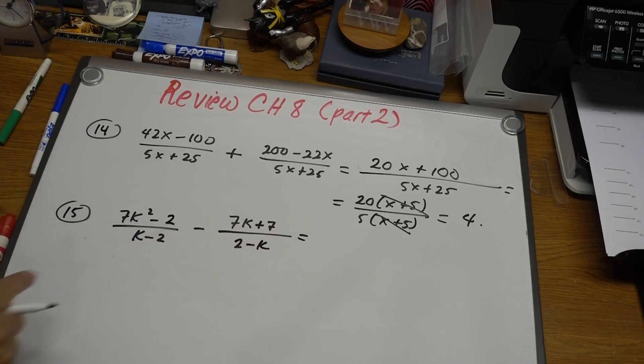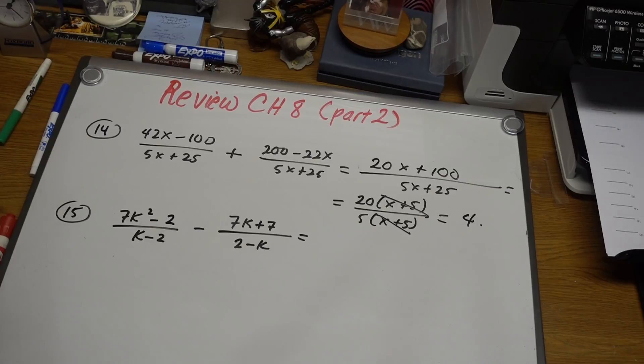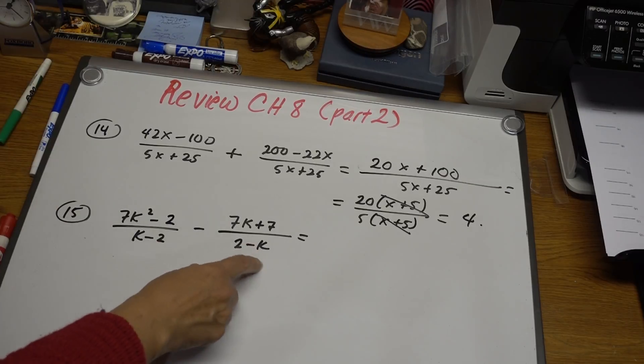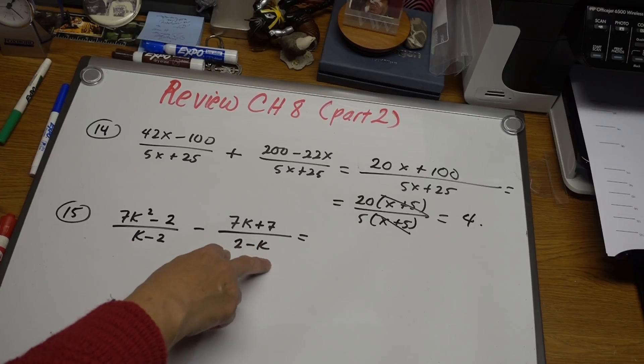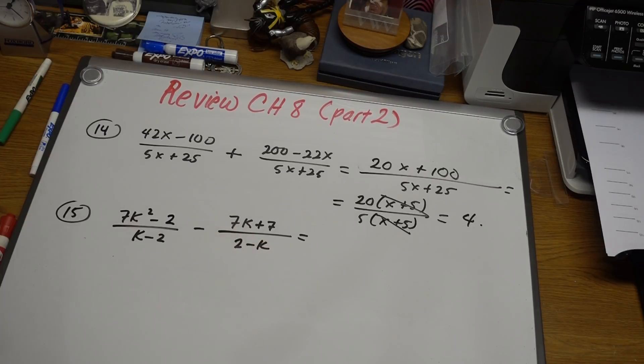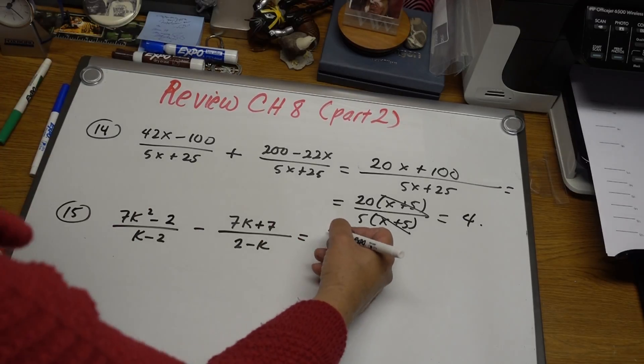We notice these two are opposite factors. These two are opposite binomials. So what we're going to do is rewrite the second one. Or you can do the first one as well, but I'm going to rewrite the second one as k minus 2 to have the same one as this one.